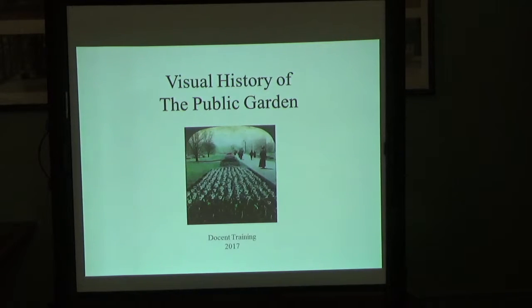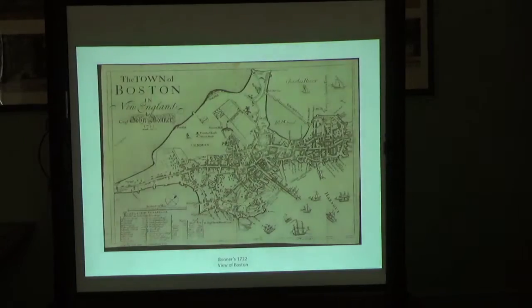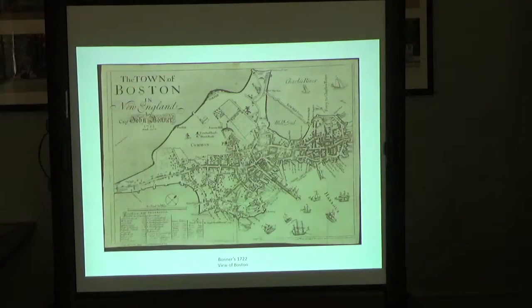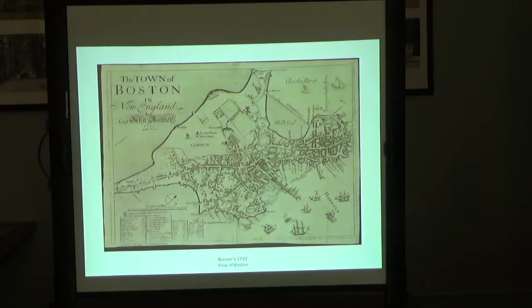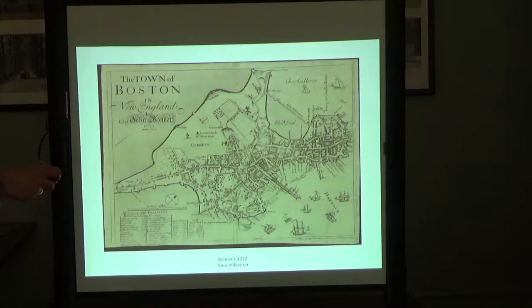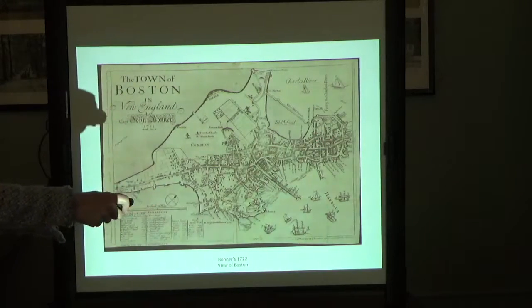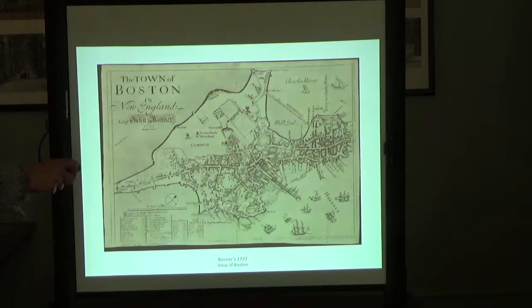We're going to start at the very beginning with a visual history of the public garden. Let's start with Bonner's view of Boston, 1722 — about 100 years after Boston was founded. The common was the western edge of Boston, that was the end of town. Most people were living in the north end and around the waterfront, a little bit in the south end. The common was the dead end of town.